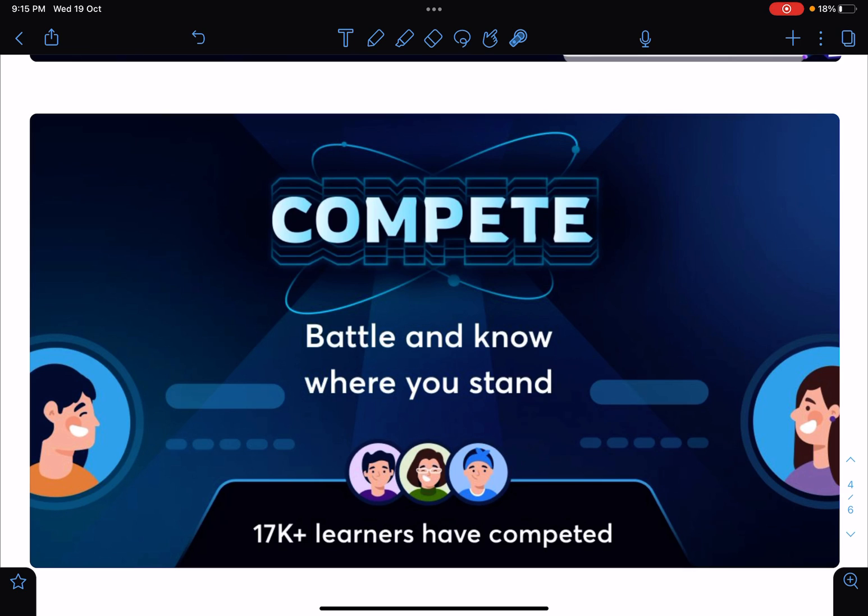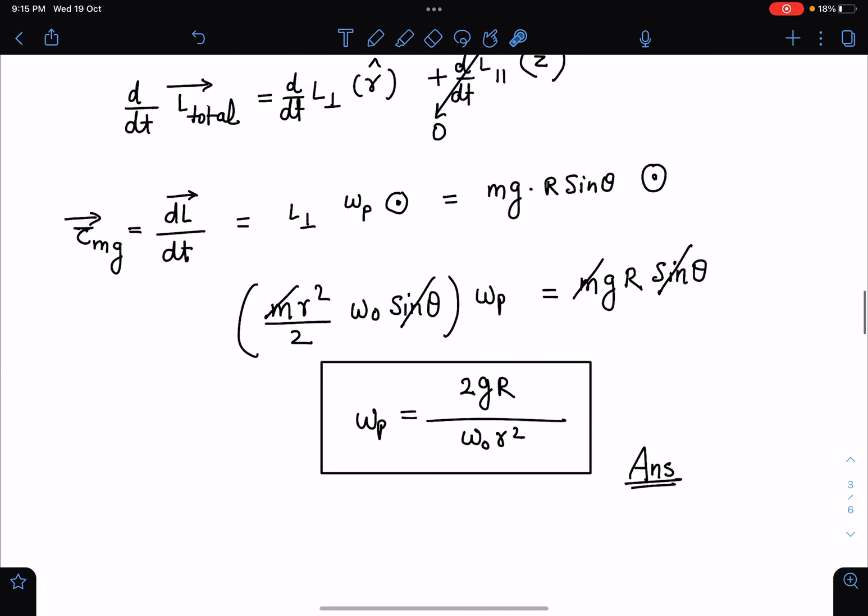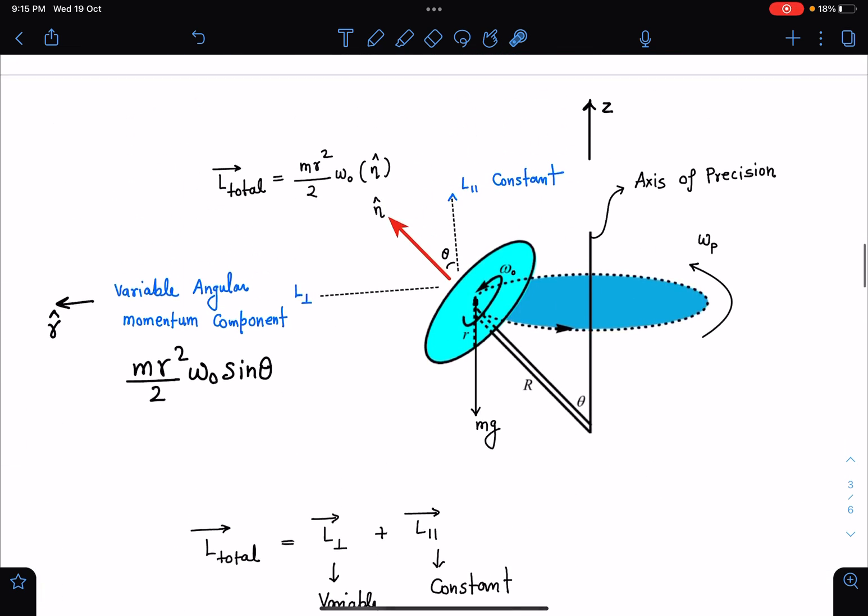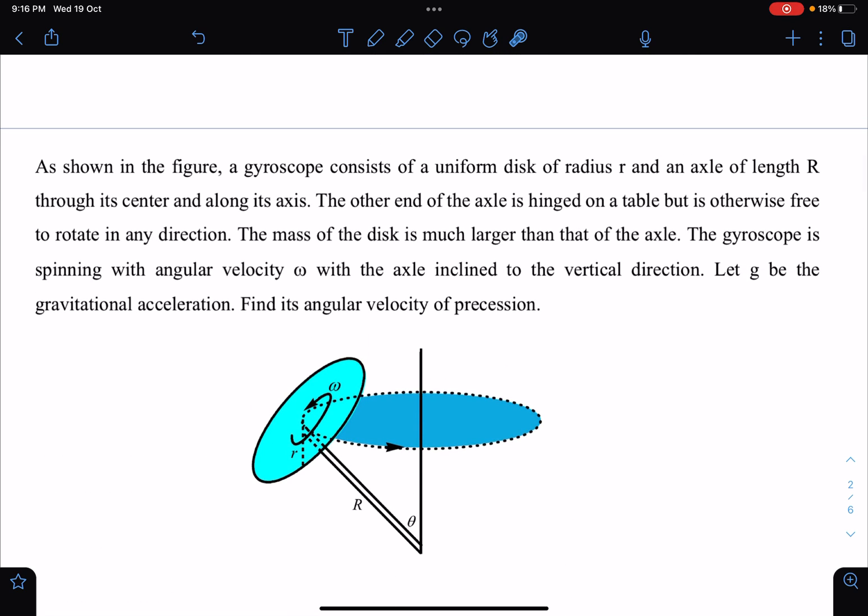This is another very good feature called Compete where you can challenge your friends in duels. This is a short quiz of 5 questions where you will get ratings based on your performance. So far, 17,000 unique learners have completed this compete. If you want to connect with me on Unacademy for theory classes, you can join me using my code. Let me know in the comment section if you have understood this properly, and I will bring more videos on 3D rotation. Thank you.